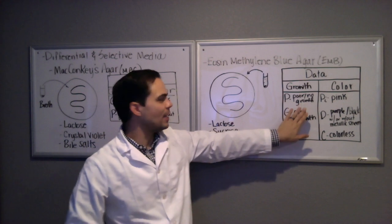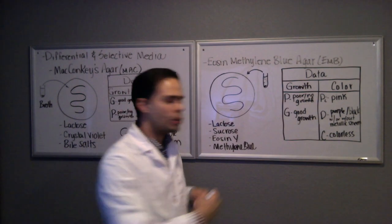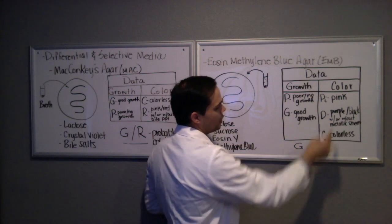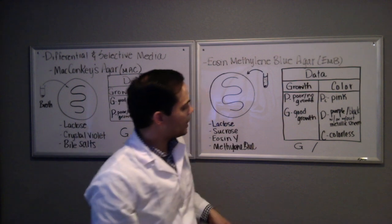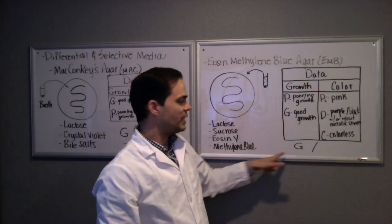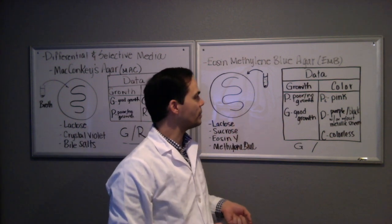When you come back, you want to log the data. Now again, you're going to look for growth and color. So let's say that ours grew. On the data sheet, you want to put a G there. Now you also have to log its color. And by the way, if it grew, we know that it's gram-negative. If it didn't grow, then it's most likely gram-positive, which again, you can corroborate doing a gram stain.